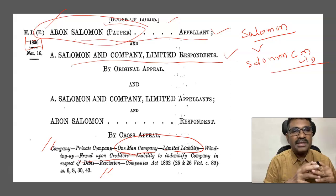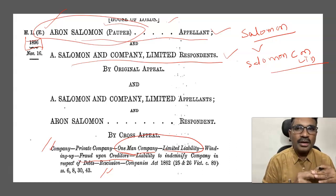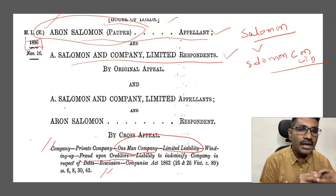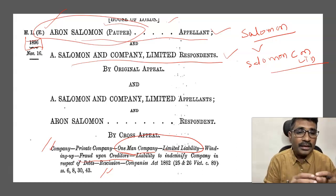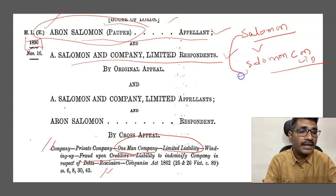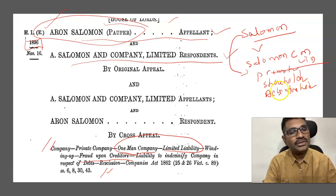Mr. Solomon, who had become insolvent, was the applicant. Against the company he brought an original case stating that as a creditor, he was supposed to get the money first, and the remaining money could be given to the shareholders of the company. Here, Mr. Solomon was playing multiple roles — he was the promoter of the company, a shareholder of the company, a debenture holder, and also the managing director of the company.